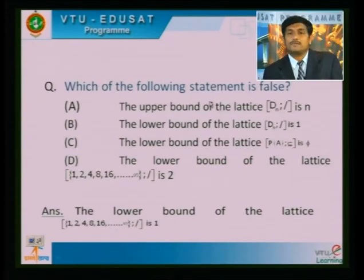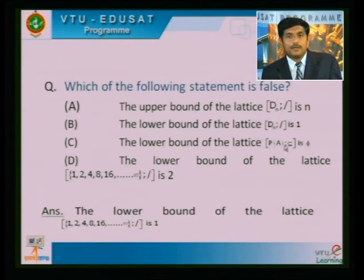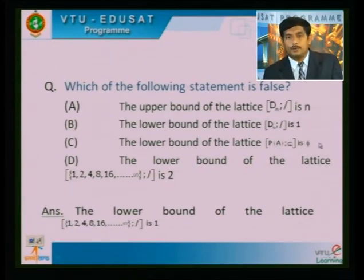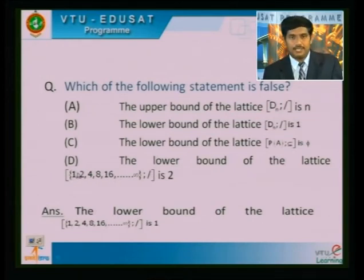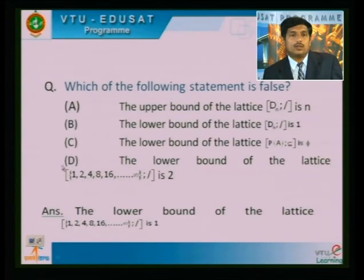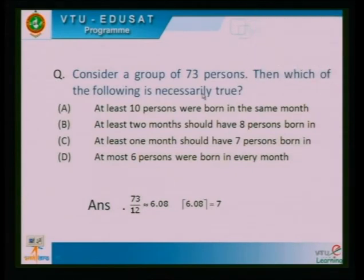Next, which of the following statements is false? The upper bound of the lattice Dₙ is n — this is true since the upper bound is n and lower bound is 1. The lower bound of the lattice P(A) (power set) is the empty set — this is true. The lower bound of the lattice {1, 2, 4, 8, 16, ...} is 1, since 1 is present. Therefore, the false statement is the one claiming the lower bound is something other than 1.